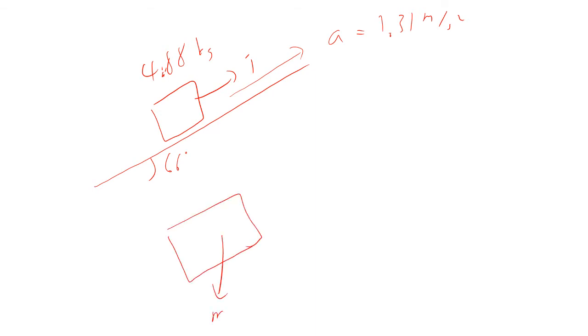Well, free body diagram, we get mg going down, we got the tension, we have the normal force. I'm going to say this direction is positive, because that's the direction of my acceleration. So, sum of the forces equals ma. So, the force in the positive direction, now again, the normal force is exactly balancing this component of the weight.